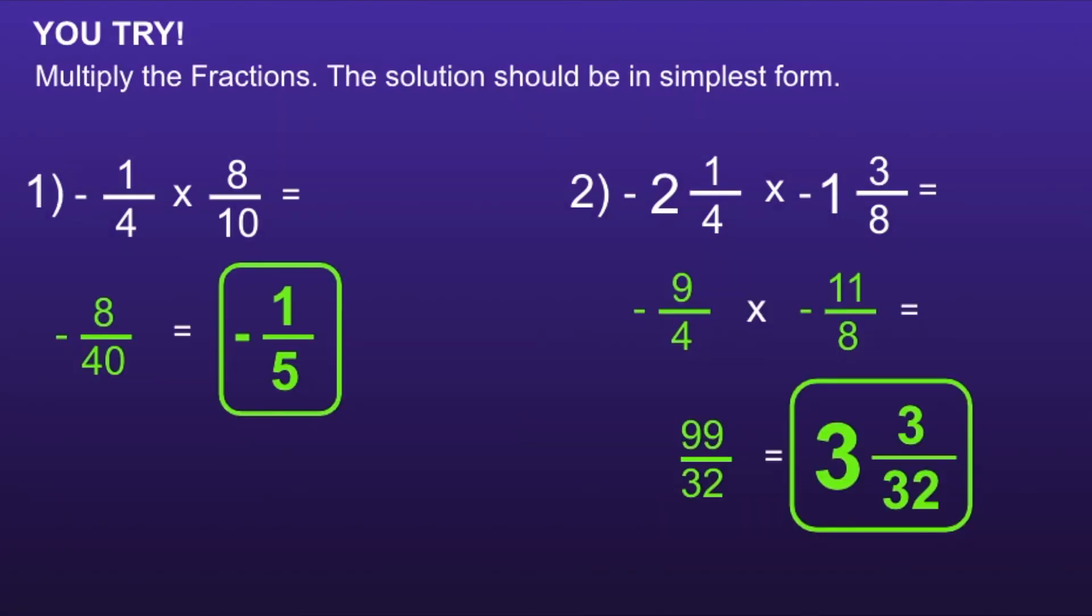Alright, let's take a look. For number one, the answer is negative one-fifth. And for number two, the answer is three and three thirty-seconds. If you had either of these incorrect, I would recommend you pause, review your work, and see if you can find your mistake. Thank you for watching!